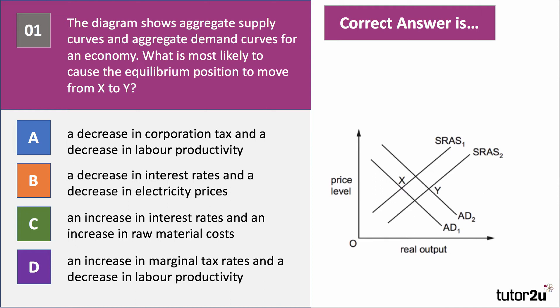Going from X to Y, there's been an outward shift of aggregate supply and an outward shift of aggregate demand. So we're looking for a combination of causes that bring about those shifts. The right answer to question one is B — a decrease in interest rates and a decrease in electricity prices. Falling interest rates is an expansionary monetary policy that would cause AD to shift out, and a decrease in electricity prices would bring a falling cost for businesses and cause an outward shift of short-run aggregate supply. It's the only combination where both factors are moving in the direction required to travel from X to Y.